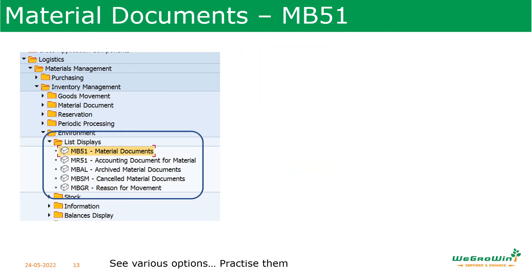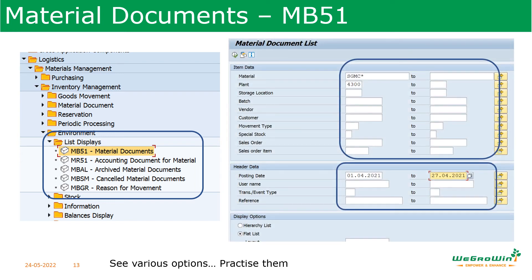The next important report is MB51. MB51 is used to see all material movements — when material was received, when it was issued, and when production was done, including 261 and 101 movement types. There are also related documents like MR51 for accounting and MBAL for GR/GI-relevant materials. Canceled material documents can also be viewed here. In MB51, selection parameters include plant, location, batch, vendor, posting date, and username — providing a lot of information about movements happening inside the plant.